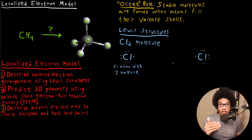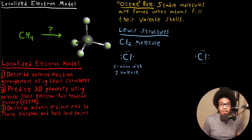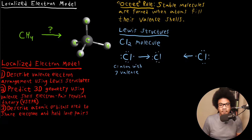Why do these chlorine atoms want to bond together? When they're isolated by themselves, they don't have a full valence shell — they don't have a full octet. Each chlorine atom just needs one more electron to fill its octet. So in order to satisfy the octet rule and become more stable, each one is going to share an electron with the other. The chlorine atom from the left shares its one electron, and the chlorine atom from the right shares its one electron — forming what's known as a bonded electron pair. We've formed a covalent bond, which is just the sharing of electrons.